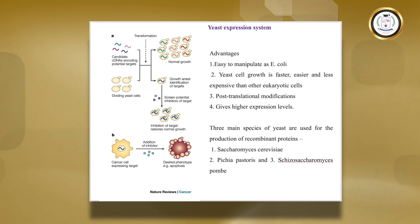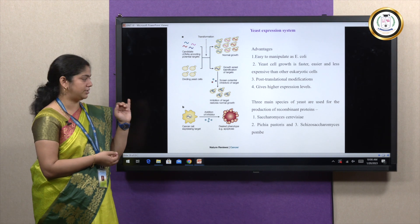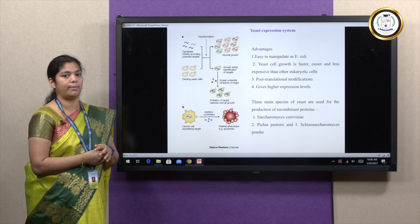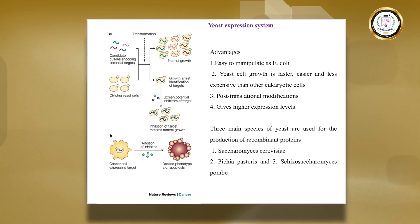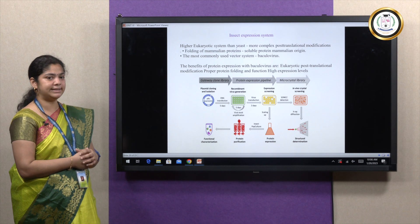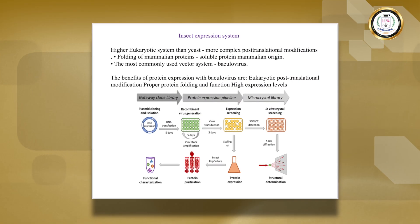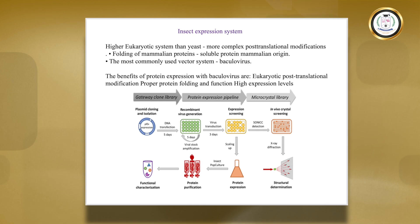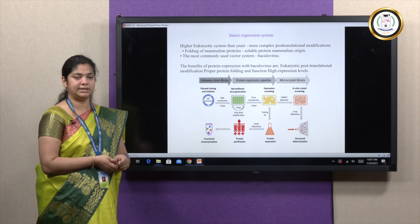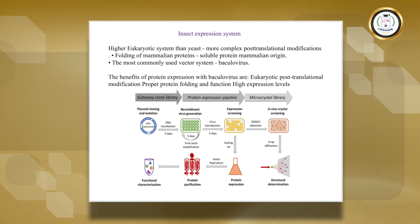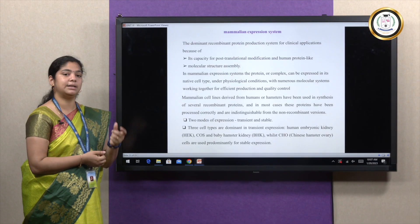Yeast is advantageous over the bacterial system mainly because of its post-translational modification capacity and higher expression levels. Hosts such as Saccharomyces cerevisiae, Pichia pastoris, and Schizosaccharomyces pombe can accommodate higher insert sizes and provide higher expression of the recombinant protein. In the insect system, baculovirus is used, offering eukaryotic post-translational modifications including proper protein folding, phosphorylation, and glycosylation — making it more useful compared to yeast or bacteria.